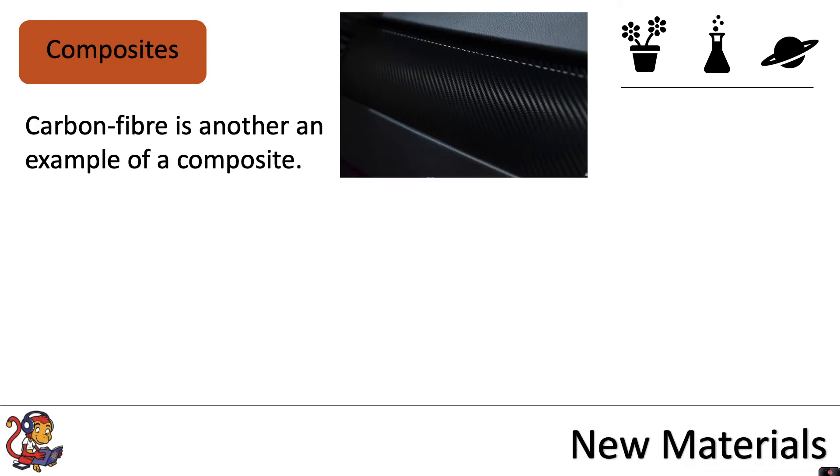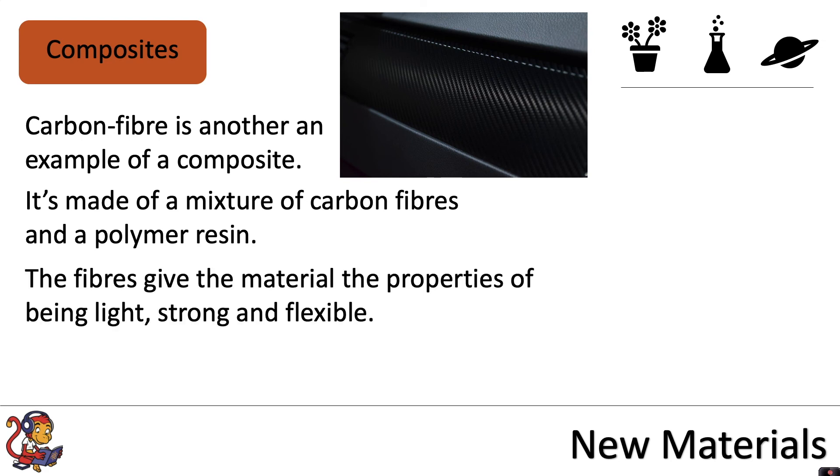And finally, another example of composite is carbon fiber. It's made of a mixture of carbon fibers and a polymer resin. The fibers give the material the properties of being light, strong, and flexible.